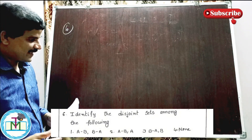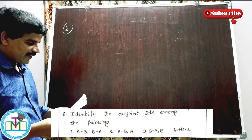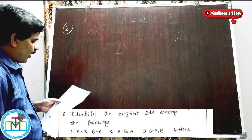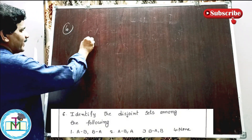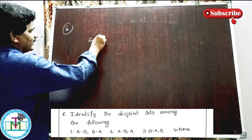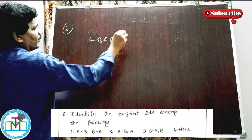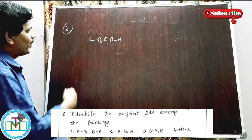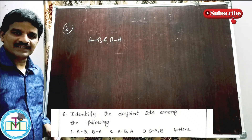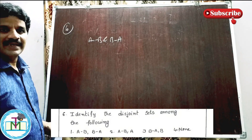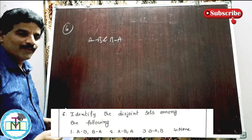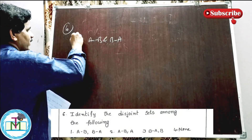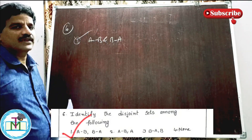Question number six: identify the disjoint sets. Option 1 is A minus B and B minus A. If we choose A minus B intersection B minus A, it is empty set — that is covered. Option 1 is the right answer.